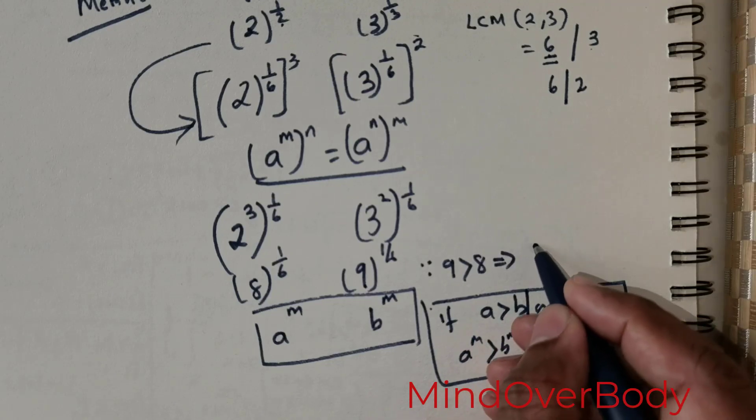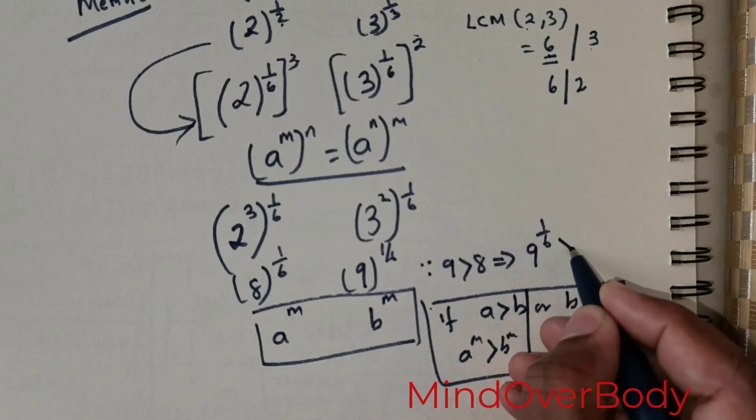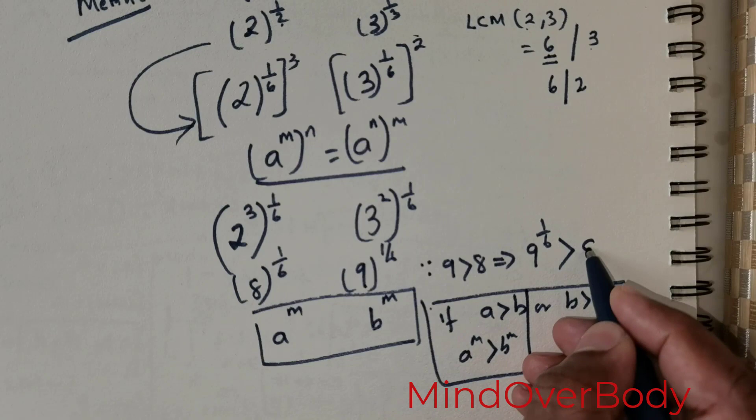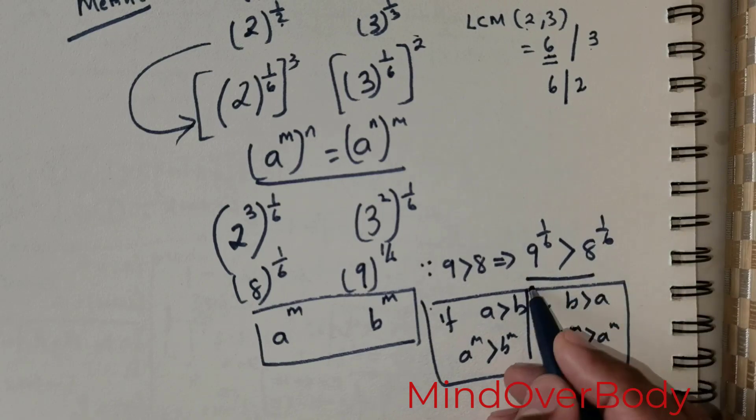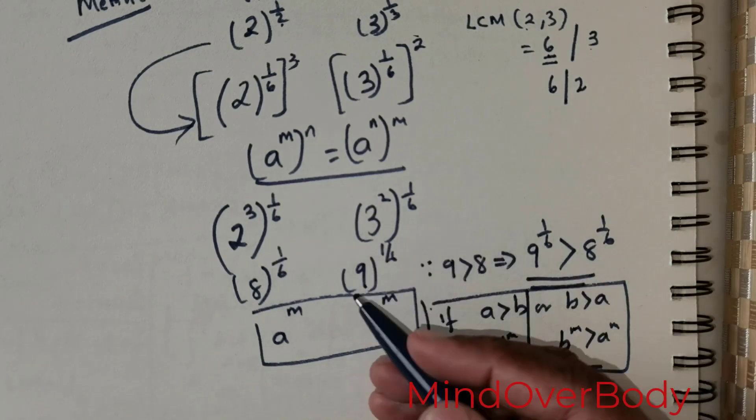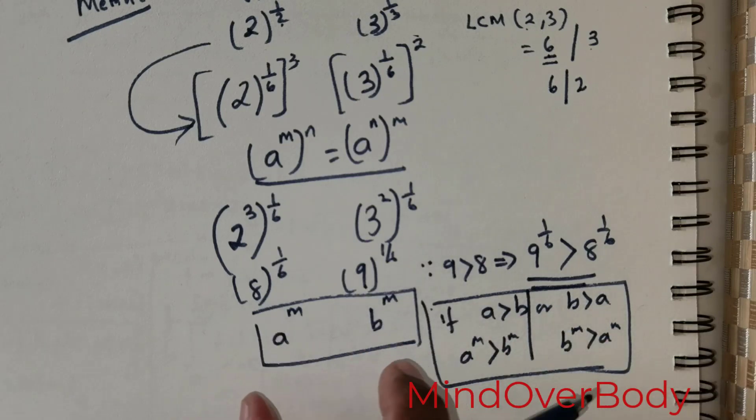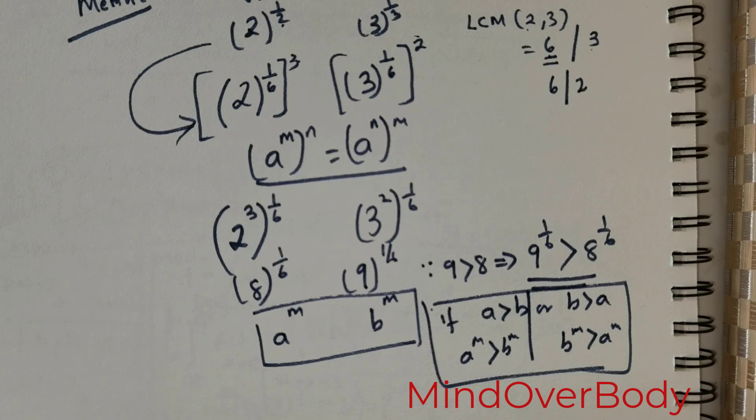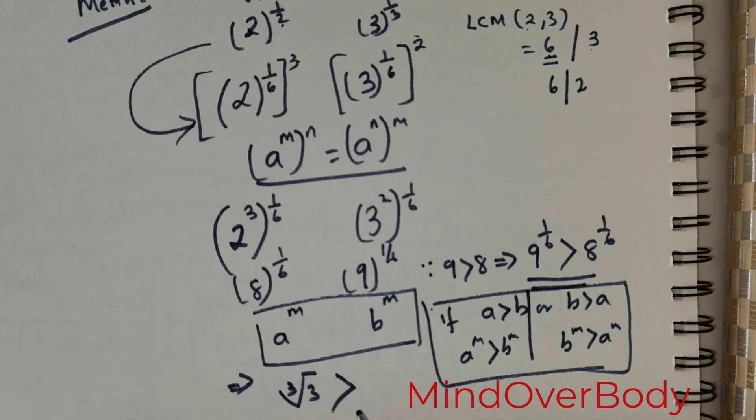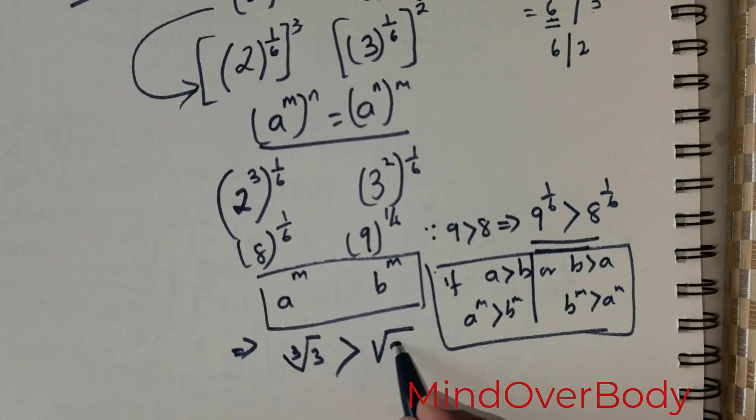This would mean 9 raised to the power 1 over 6 will be greater than 8 raised to the power 1 over 6. So that's the solution. Clearly even by this method, third root of 3 is greater than square root of 2. That is what this method is teaching us. So this implies third root of 3 is greater than square root of 2.